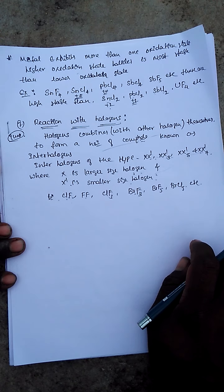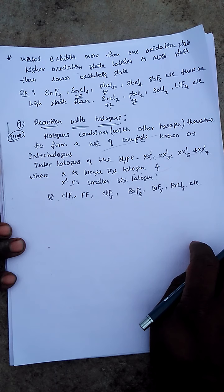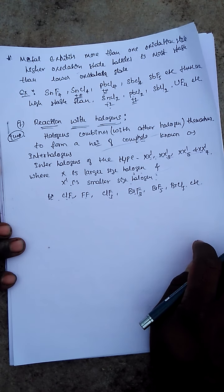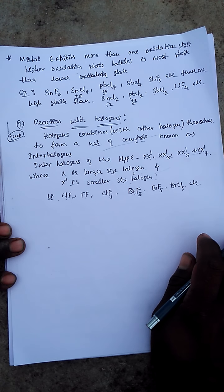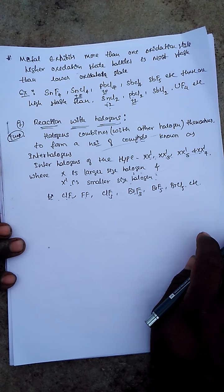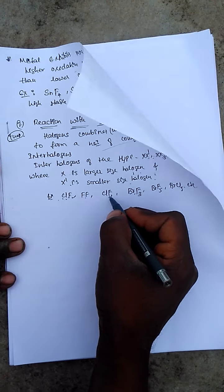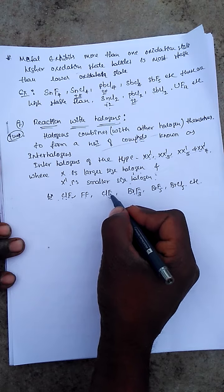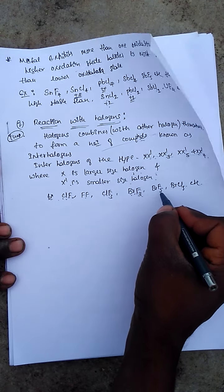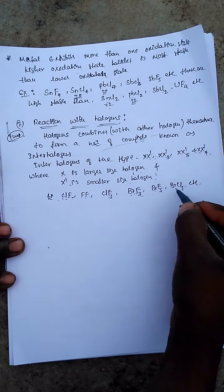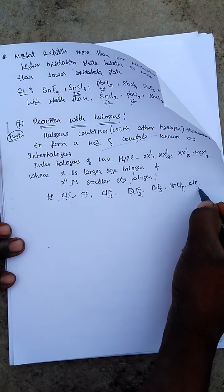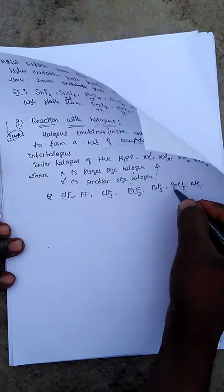Examples of interhalogen compounds include fluorochloride (ClF), chlorotrifluoride (ClF3), bromotrifluoride (BrF3), bromopentafluoride (BrF5), and bromopentachloride. These are all interhalogen compounds.